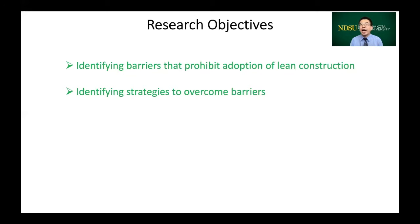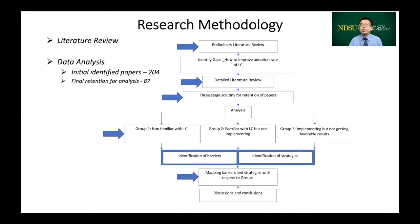The research method involves a preliminary and detailed literature review which identifies gaps and establishes study objectives. A three-stage strategy was adopted for the literature search. As shown in the chart, in the first stage, 204 related articles were identified, and in the last stage, 87 articles were kept for further analysis since they have explained the barriers and successful adopting strategies for lean construction.